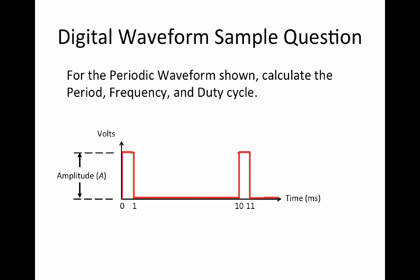The period, T, is measured from the edge of one pulse to the corresponding edge of the next pulse. In this case, the period, T, is measured from leading edge to leading edge as shown. In this example, we can see that the period, T, is equal to 10 milliseconds.